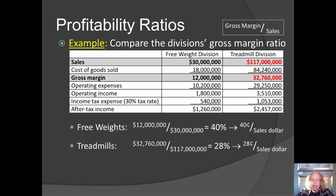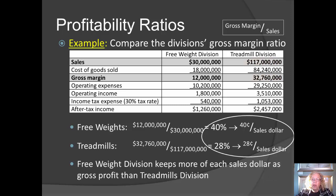In other words, the treadmill division only kept 28 cents out of each sales dollar for gross margin. This tells us that cost of goods sold eats up more sales revenue in the treadmill division than in the free weights division. Thus, the free weights division kept more of each sales dollar, and the reason for that is the nature of cost of goods sold for each division.